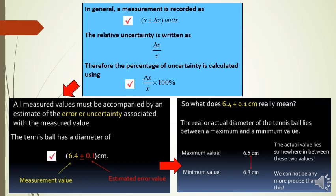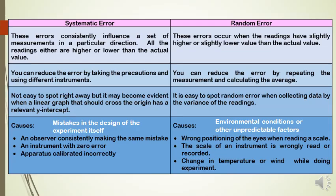For example, a tennis ball has a diameter of 6.4 ± 0.1 cm. This means that the actual value lies somewhere between 6.3 cm and 6.5 cm. What is causing the uncertainty in a measurement?